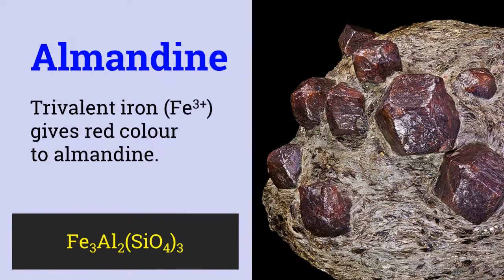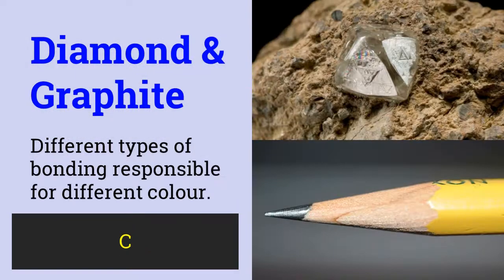But just a single change in the valency of iron — that is trivalent ferric iron — would give a mineral red, brown, yellow or blue color, and in the case of almandine gives a red color. Valency is not the only factor which affects color. Different types of bonding can also cause varied color of the same element, as in the case of diamond and graphite.